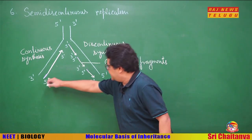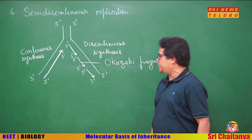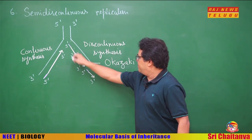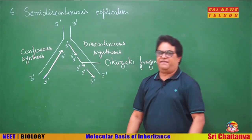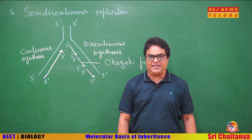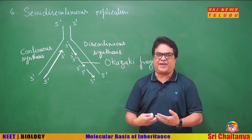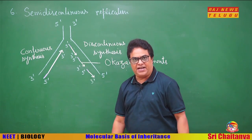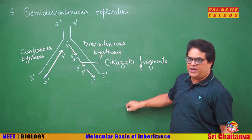The strand synthesized continuously is the leading strand, growing towards the fork. The discontinuously synthesized strand is made continuous later by replacing the RNA primers with DNA using DNA polymerase, and then joining the Okazaki fragments using the enzyme DNA ligase. This strand — made continuous by joining Okazaki fragments — is called the lagging strand, and it grows away from the fork.